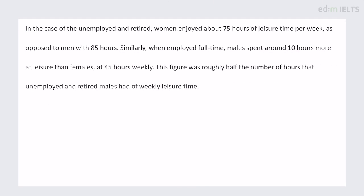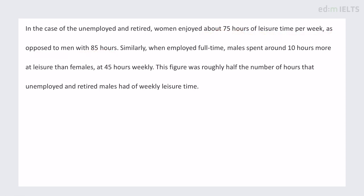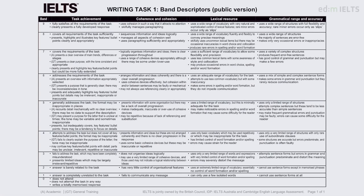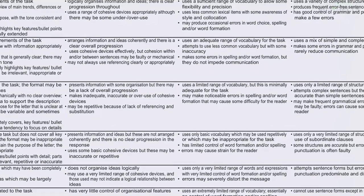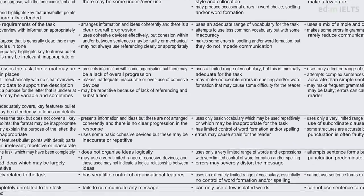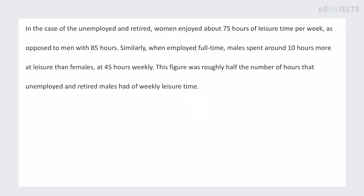'In the case of the unemployed and retired, women enjoyed about 75 hours of leisure time per week, as opposed to men with 85 hours.' I like that it's trying to use something different — 'as opposed to' — because it's a less common connective, which could be an impressive part of coherence. However, for me, it's probably not perfectly accurate. 'As opposed to' is kind of similar to 'rather than.'